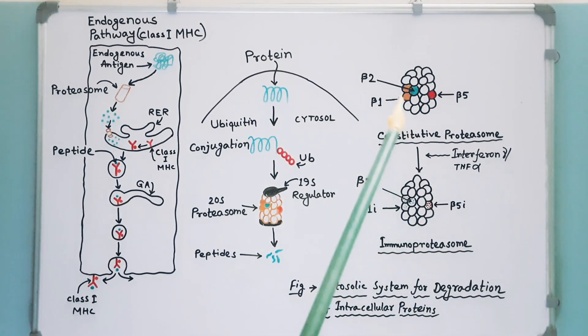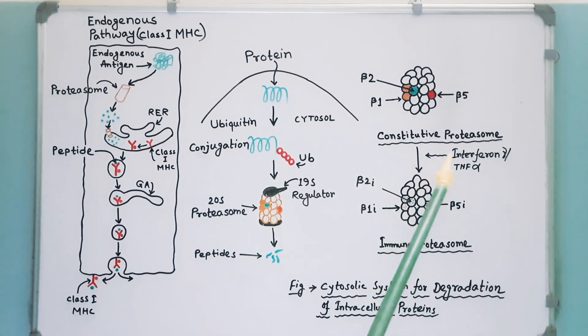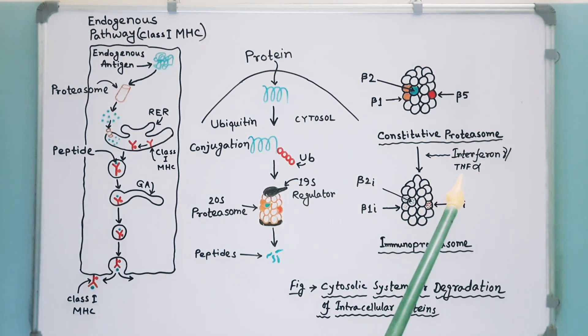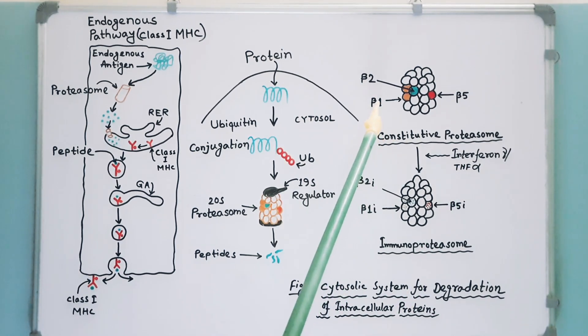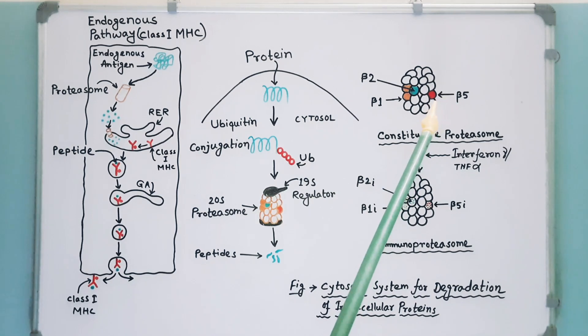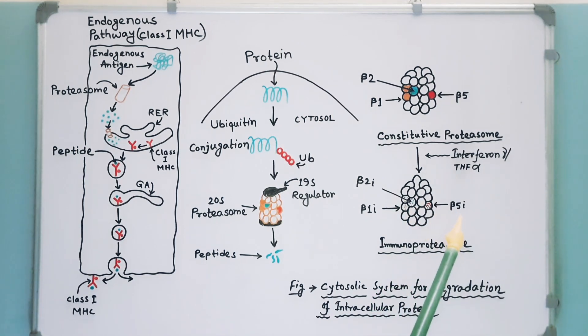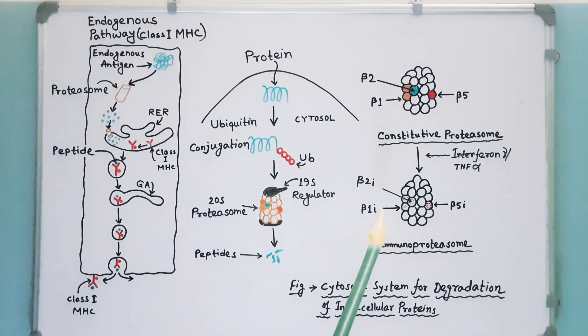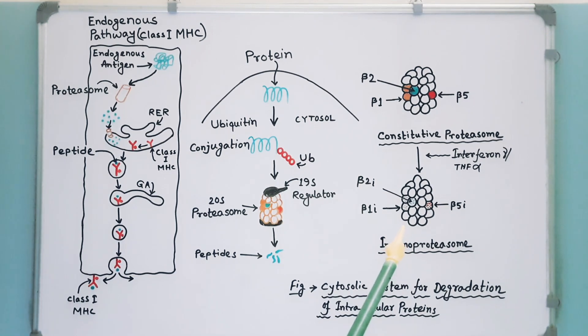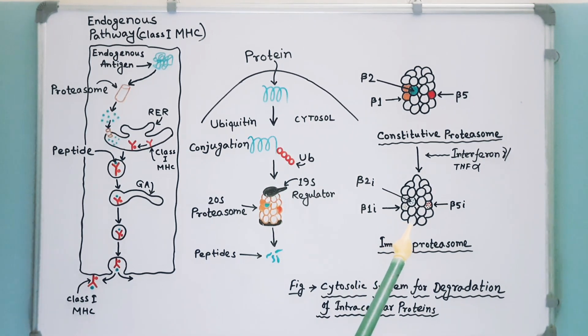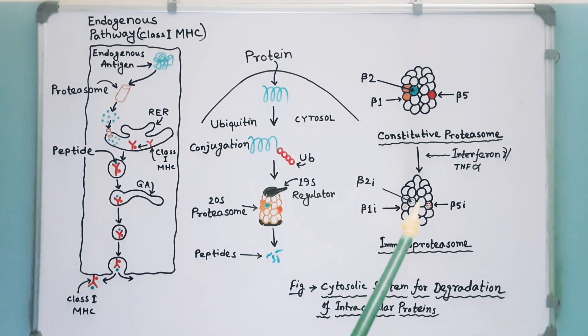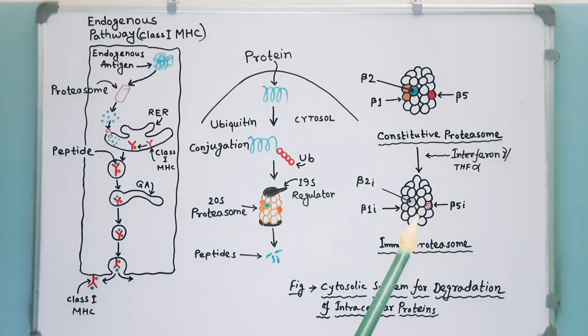It is the modified version of standard or constitutive proteasome. By exposure to interferon gamma or TNF-alpha, few catalytic subunits like beta-1, beta-2, and beta-5 are replaced by beta-1i, beta-2i, and beta-5i subunits. These subunits are encoded by LMP-2 and LMP-7 genes, which are located within the class 1 region. These subunits increase the production of peptides that bind efficiently to MHC class 1 proteins.